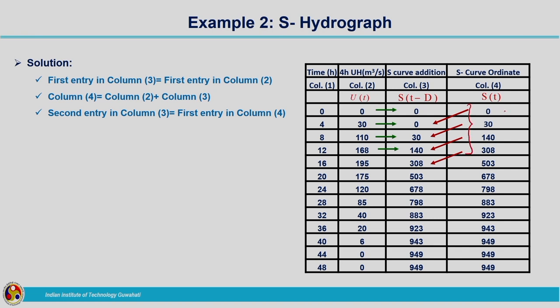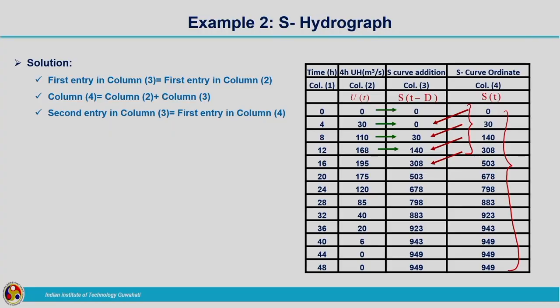This procedure is followed to produce the S curve ordinates for different time intervals. We have written the unit hydrograph ordinates, found the S curve additions, and added them to the unit hydrograph ordinates. The same example can be solved another way: you do not always have to write a separate column for S curve addition; you can directly get the ordinates of the S hydrograph.